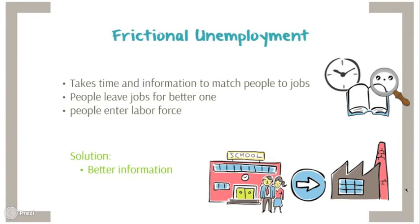Frictional unemployment occurs because it takes time and information for workers to find jobs suitable for them. People leave their jobs and seek a better one. People also return to the labor force after taking time out or after graduating from college. So looking for a job in the short term leads to frictional unemployment.